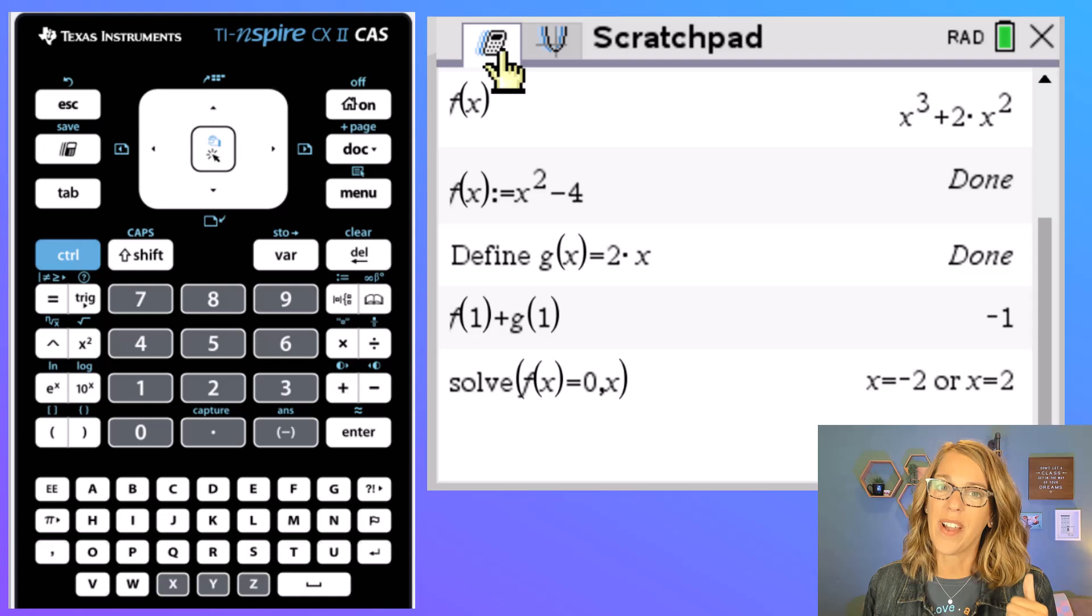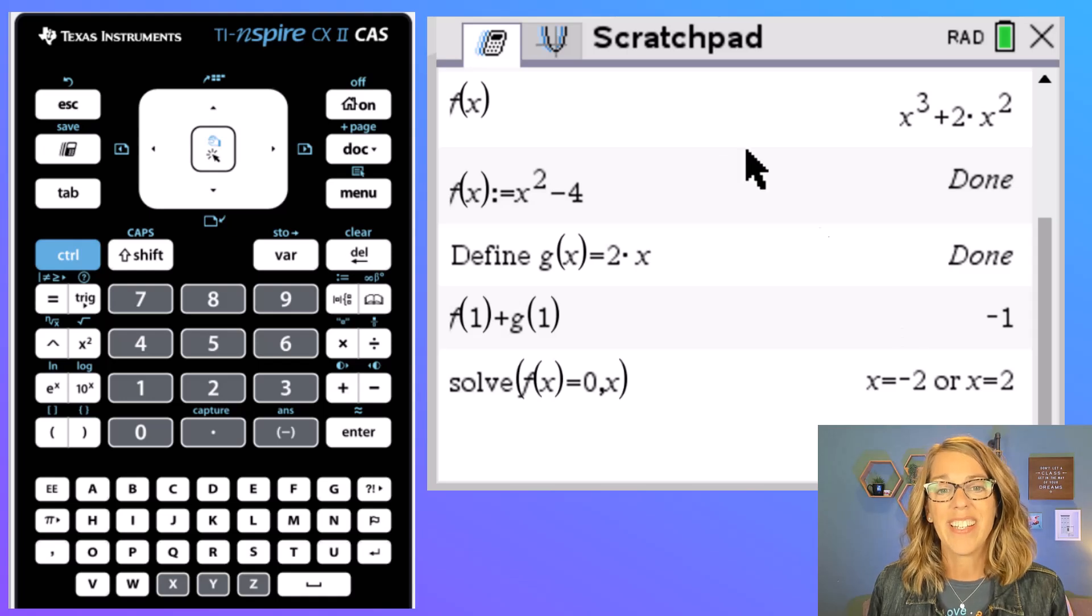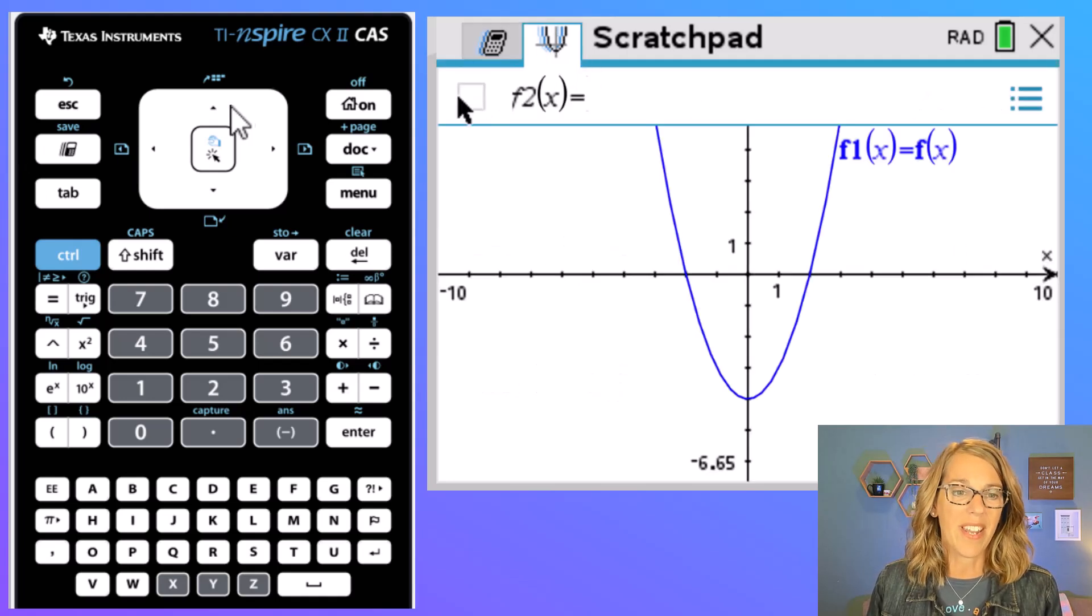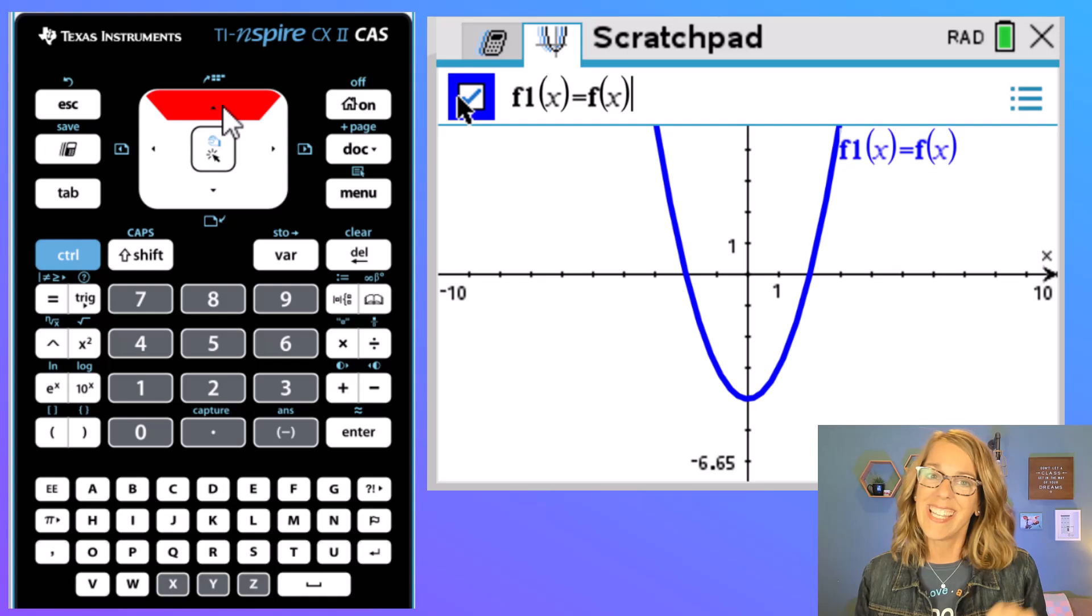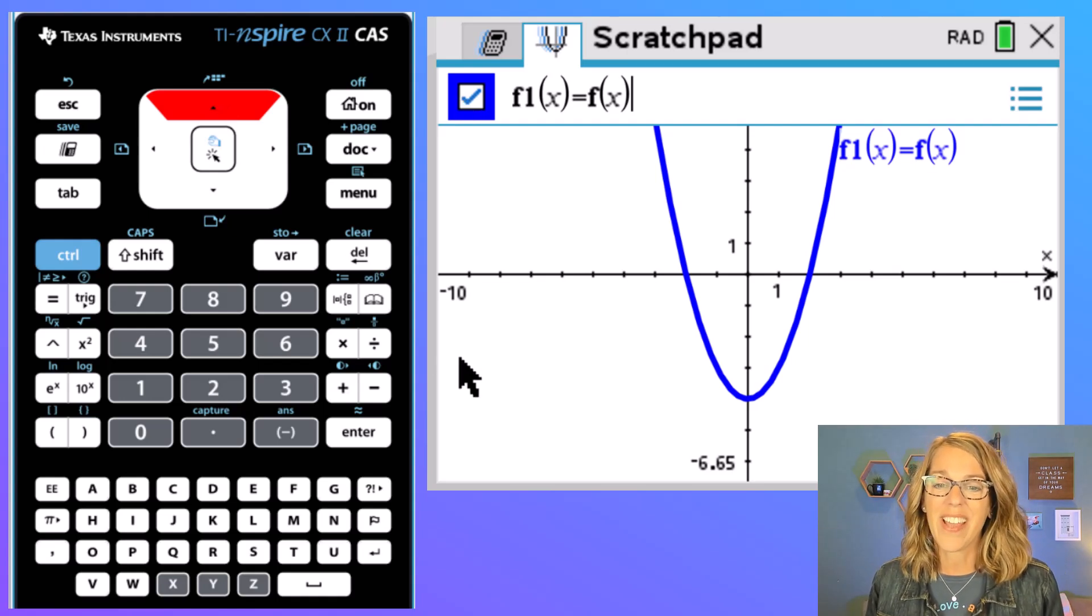Now back on the calculator, I asked where f of x was equal to 0. It gave me these solutions, which are also my x-intercepts. Take a look at that graph. I'm going to arrow up so that you can see that it's the function still. And I've got x-intercepts, sure enough, at negative 2 and positive 2.